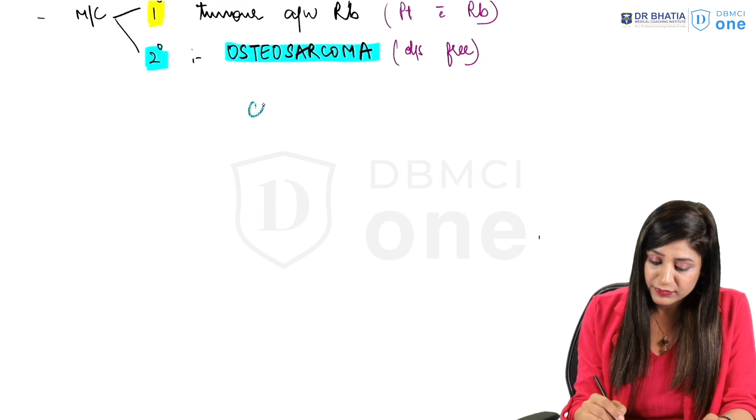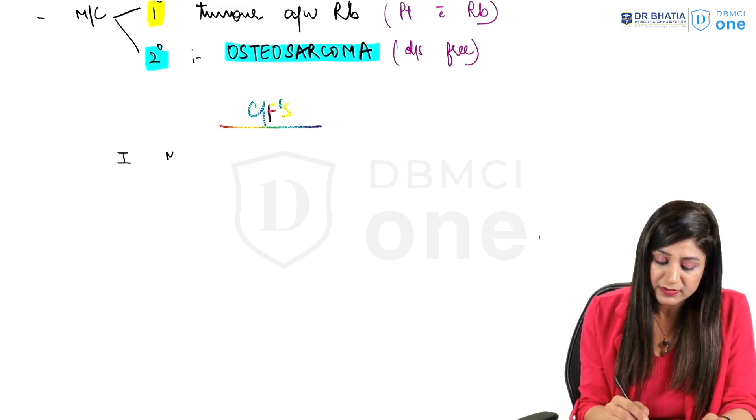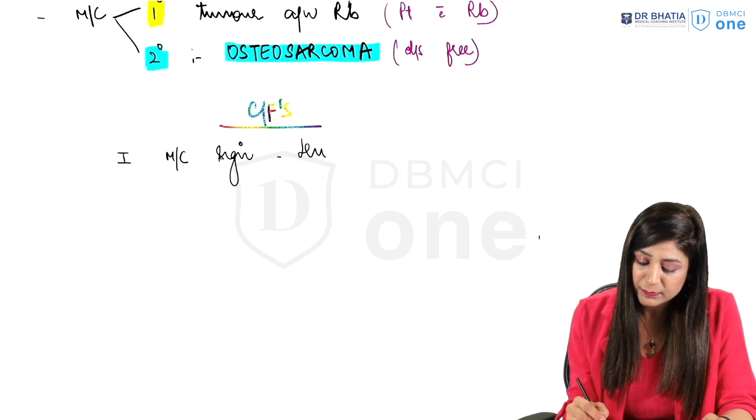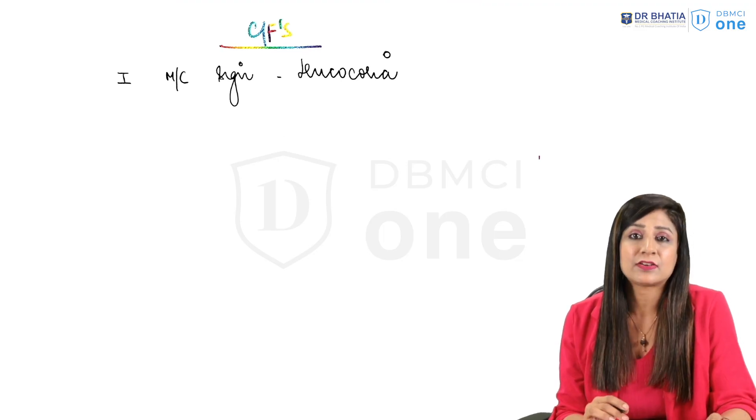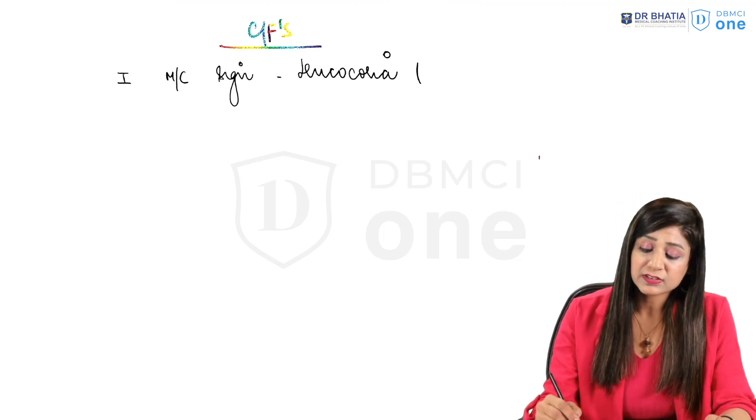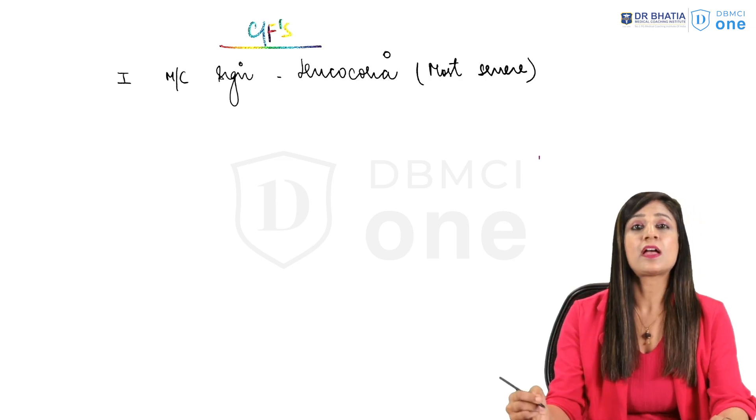Coming to the clinical features of this patient, what can be the first most common sign? The most common sign of the retinoblastoma will be leukocoria or the whitish pupillary reflex. We have already studied leukocoria in the cataract. Leukocoria's most common DD is cataract but most severe DD of leukocoria is retinoblastoma.